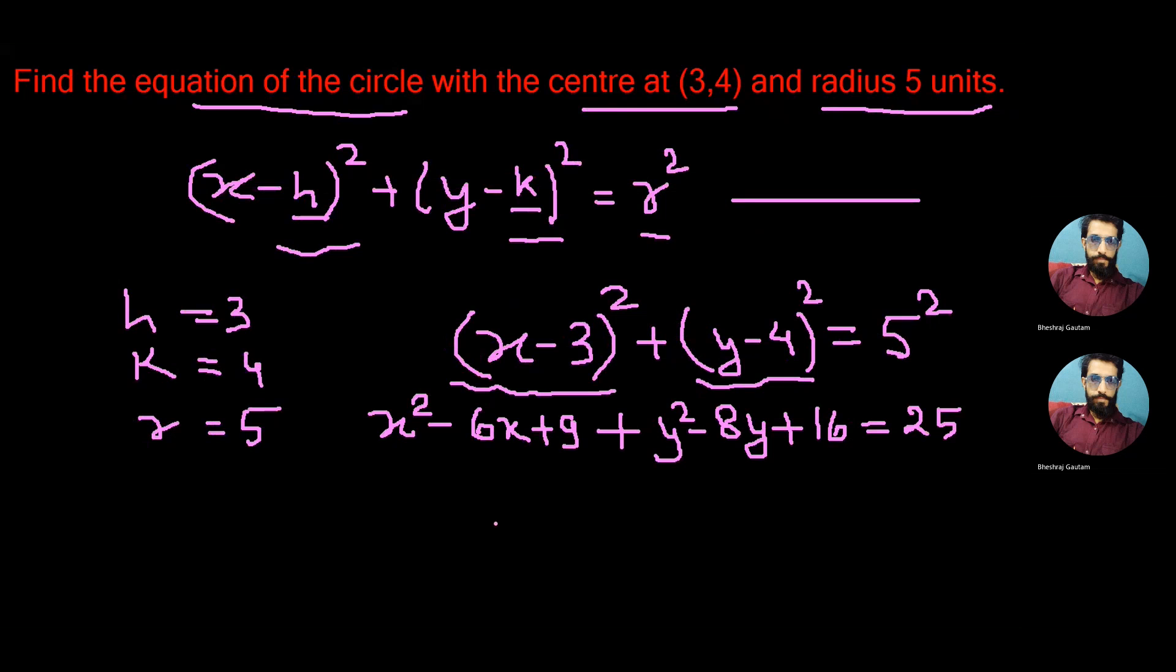(a-b)² is equal to a² - 2ab + b². Now we can write the above equation as x² - 6x + y² - 8y + 9 and 16 is equal to 25.